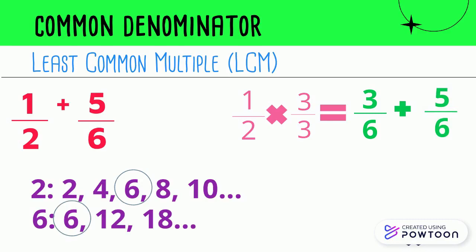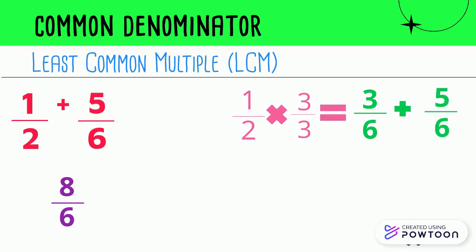Now that they both have a six on bottom, you can add your numerators, three and five. Three plus five is eight. We get eight over six. That is an improper fraction. So we have to divide eight divided by six to simplify.